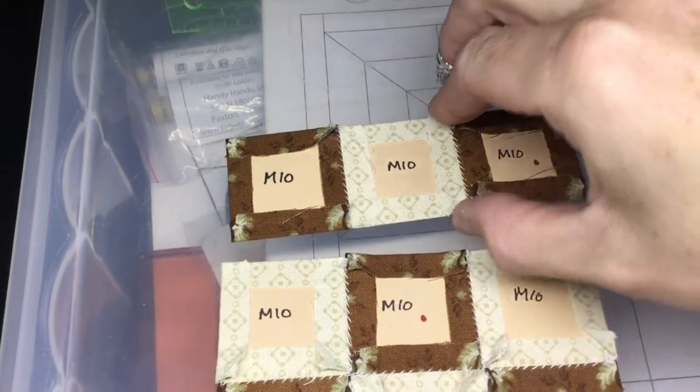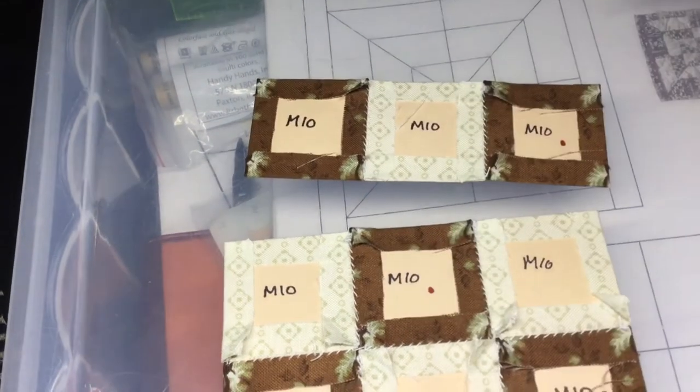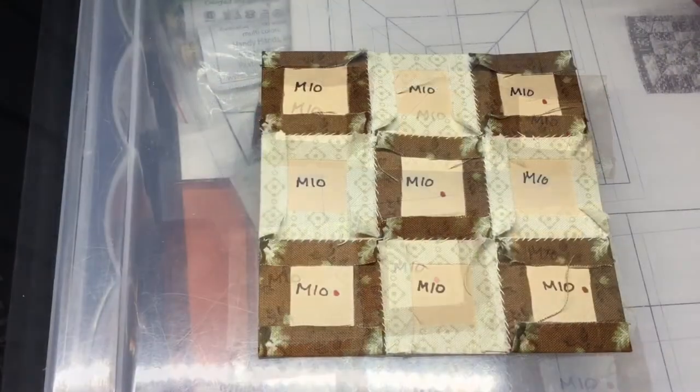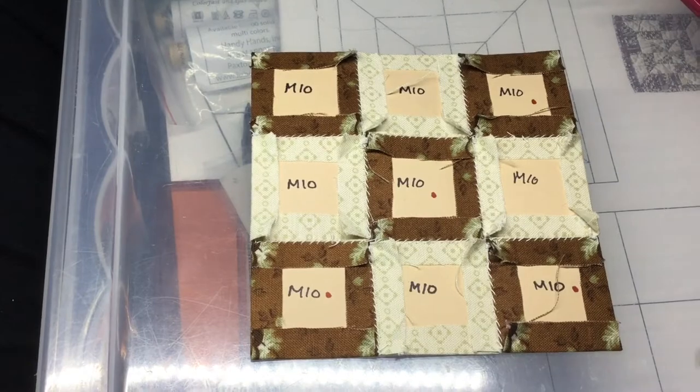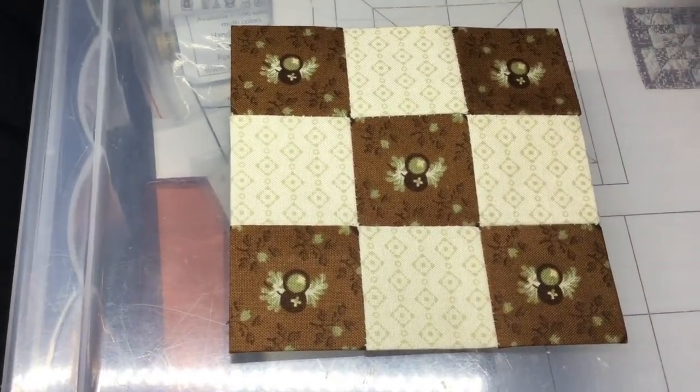Top row is all stitched together and assembled. Now it's time to attach it to the rest of the block. So I've attached the top row to the rest of my block, and I have a completed M10 block.